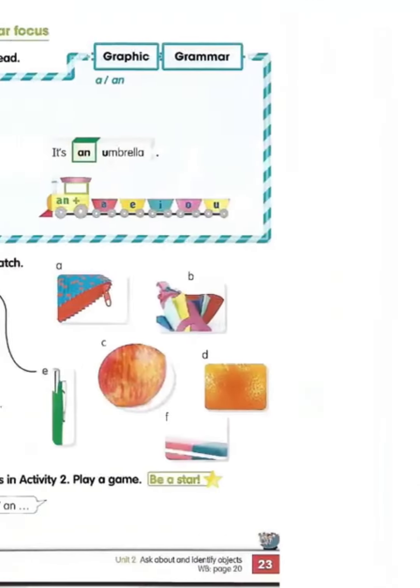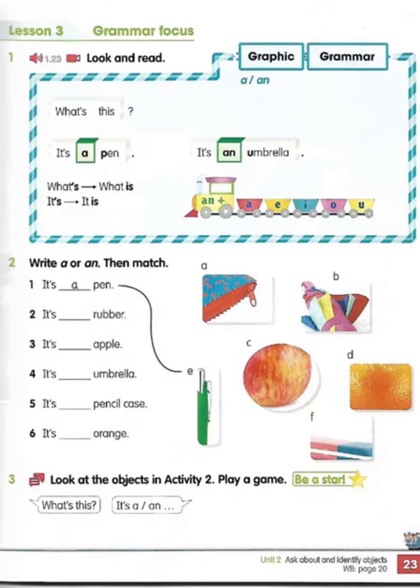Track 1.23 Unit 2 Lesson 3 Activity 1. What's this? It's a pen. It's an umbrella.